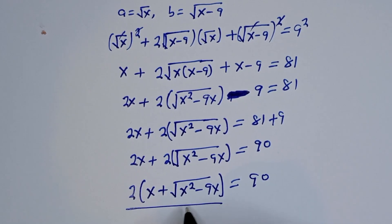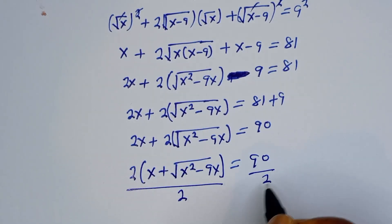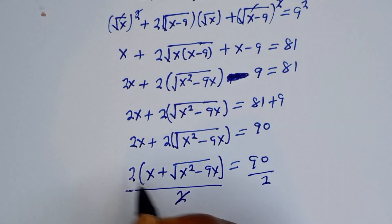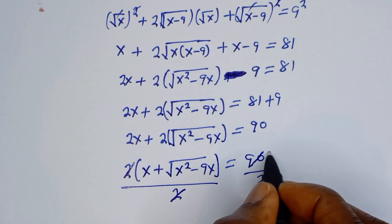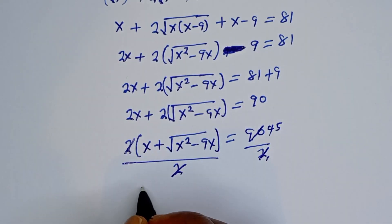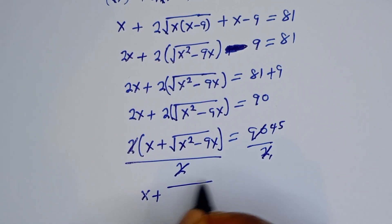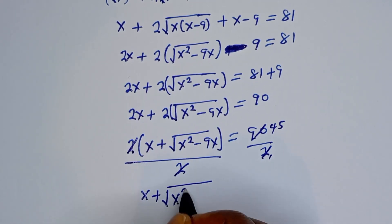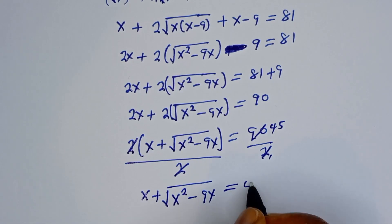Now let's divide both sides by 2. Dividing by 2, we cancel the 2s. We get s plus square root of s squared minus 9s is equal to 45.